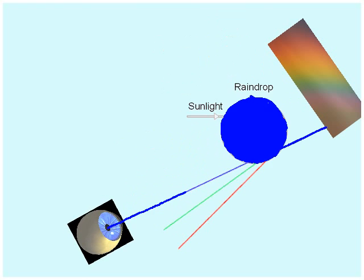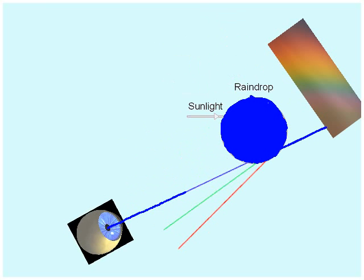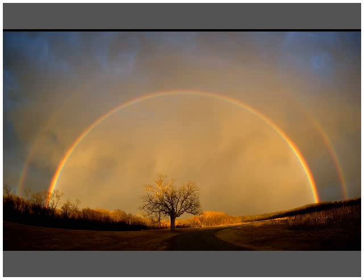And as you look around, up and down, you see all those colors. And we call those colors, when they're in that order, up in the sky, a rainbow.